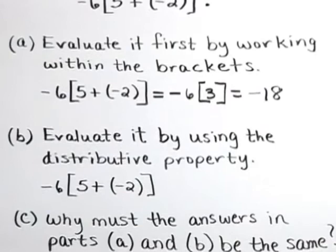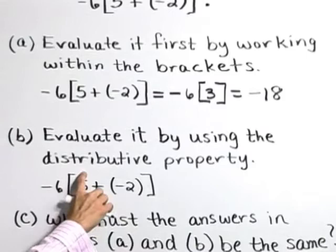In part B, evaluate it by using the distributive property. Here, instead of performing what's in the brackets first, we're going to distribute this negative 6 to each term through multiplication.